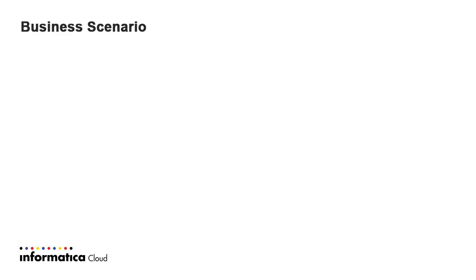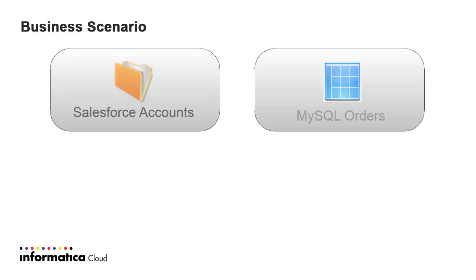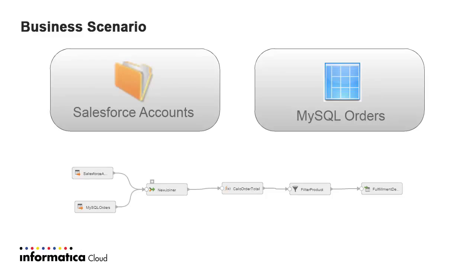On a nightly basis, you must create a flat file containing order data. The data must come from two separate sources: the Account record in Salesforce, which contains all of the shipping data for each customer, and an Orders table in a MySQL database, which contains order detail information including product IDs and quantities. You must also calculate an order total based on product quantity and price, and filter the results based on product. Since the data synchronization app does not support multiple connection sources, you can use the Mapping Designer to create a mapping and then create a mapping configuration task to run the job on a regular schedule.